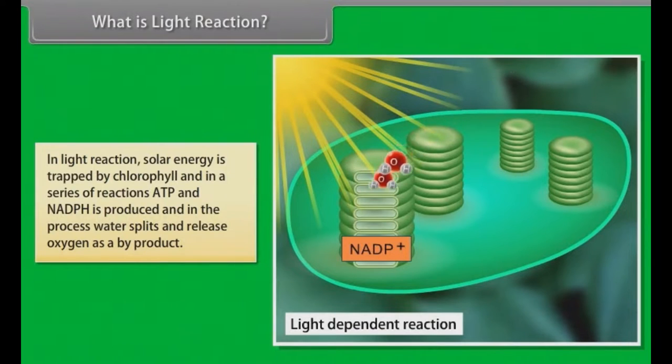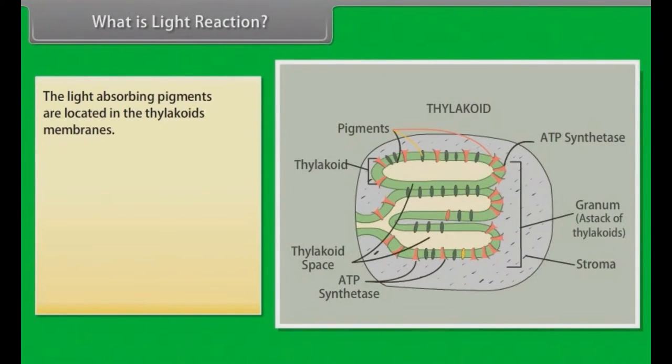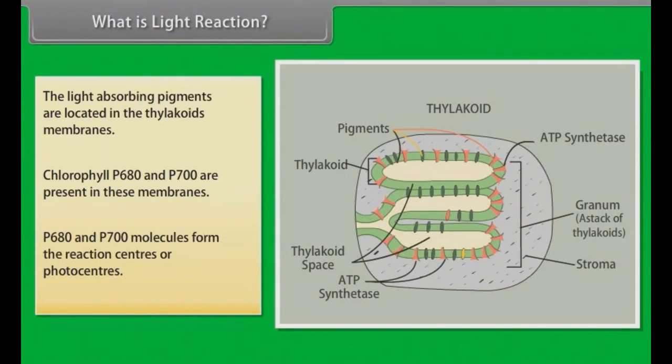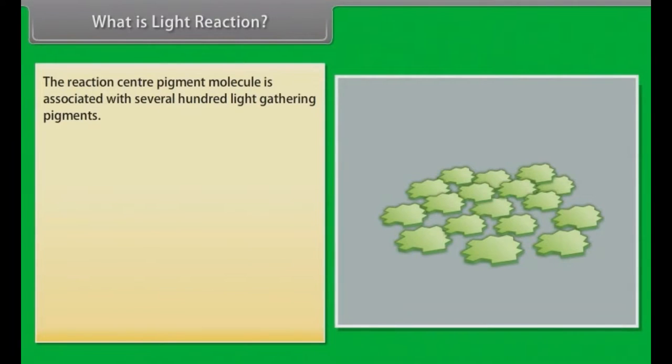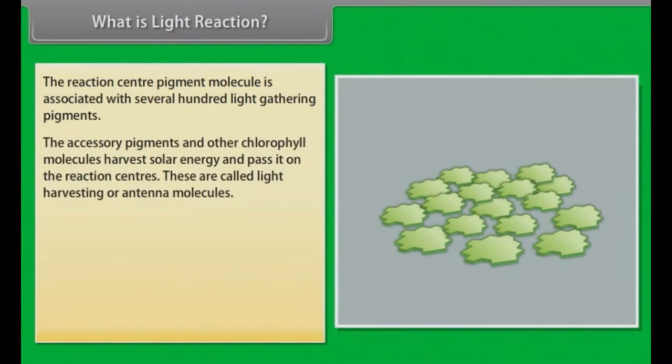What is light reaction? In light reaction, solar energy is trapped by chlorophyll and in a series of reactions, ATP and NADPH is produced and in the process, water splits and releases oxygen as a by-product. The light absorbing pigments are located in the thylakoid's membranes. Chlorophyll P680 and P700 are present in these membranes. P680 and P700 molecules form the reaction centers or photo-centers. The reaction center pigment molecule is associated with several hundred light-gathering pigments. The accessory pigments and other chlorophyll molecules harvest solar energy and pass it on to the reaction centers.